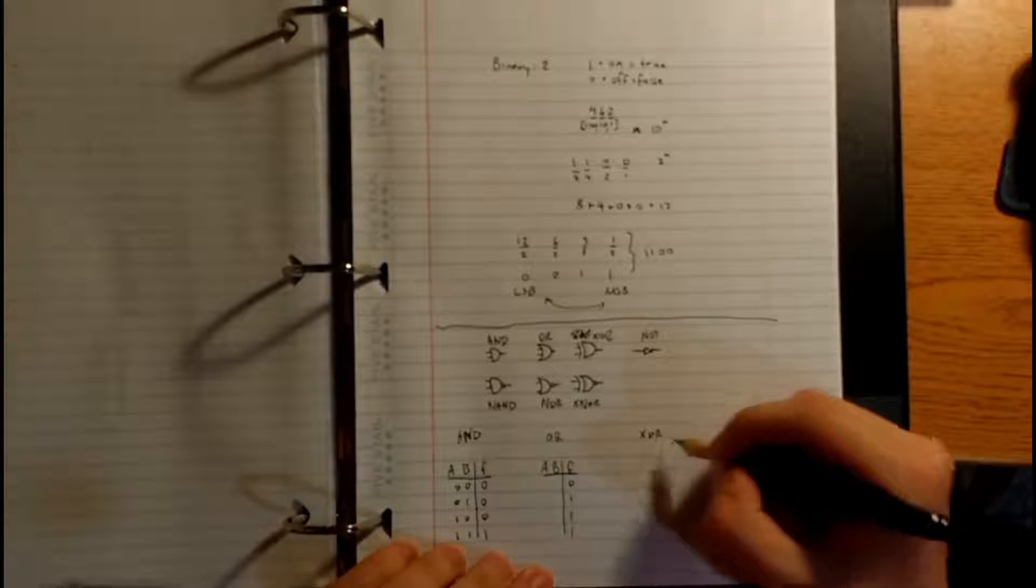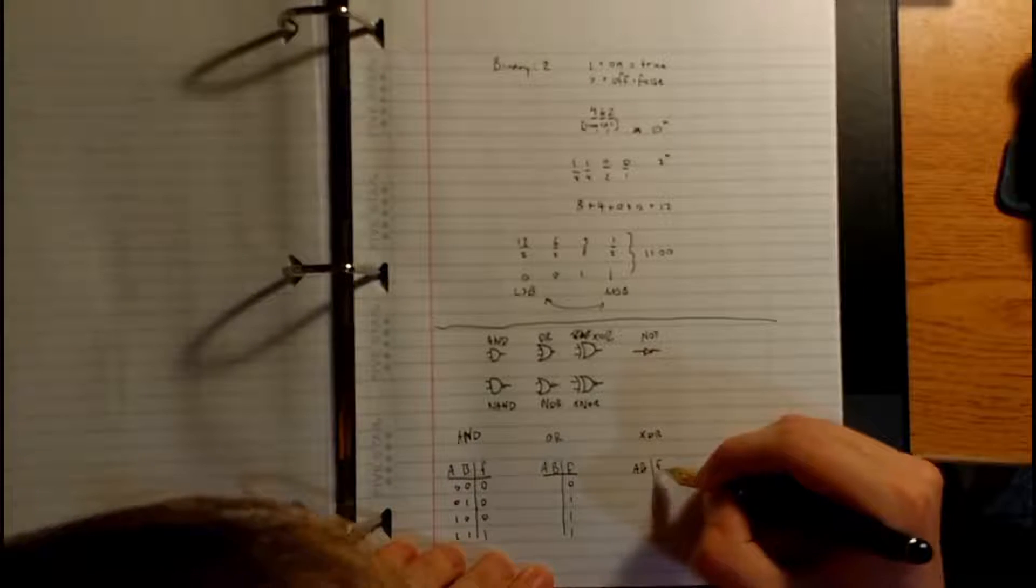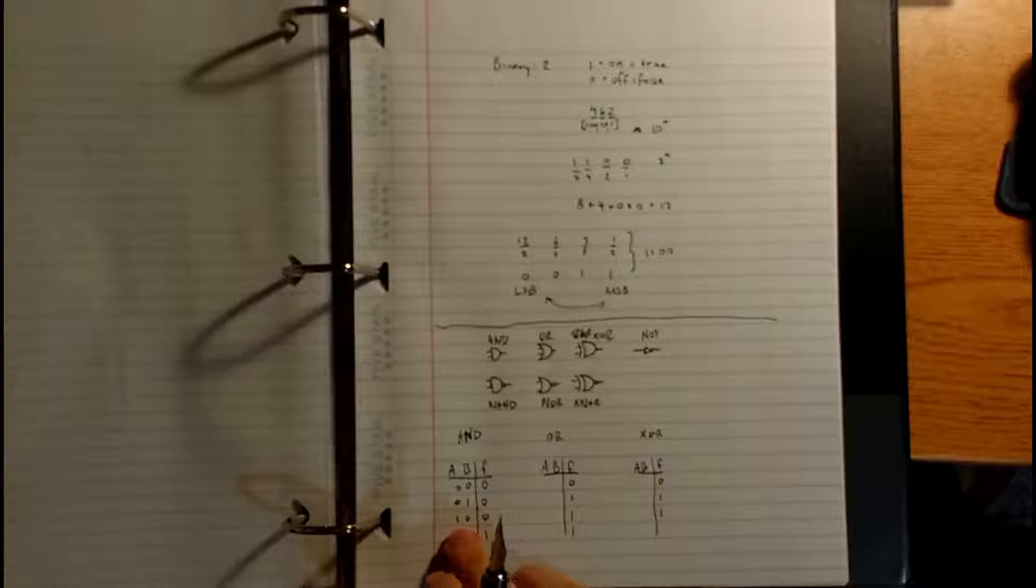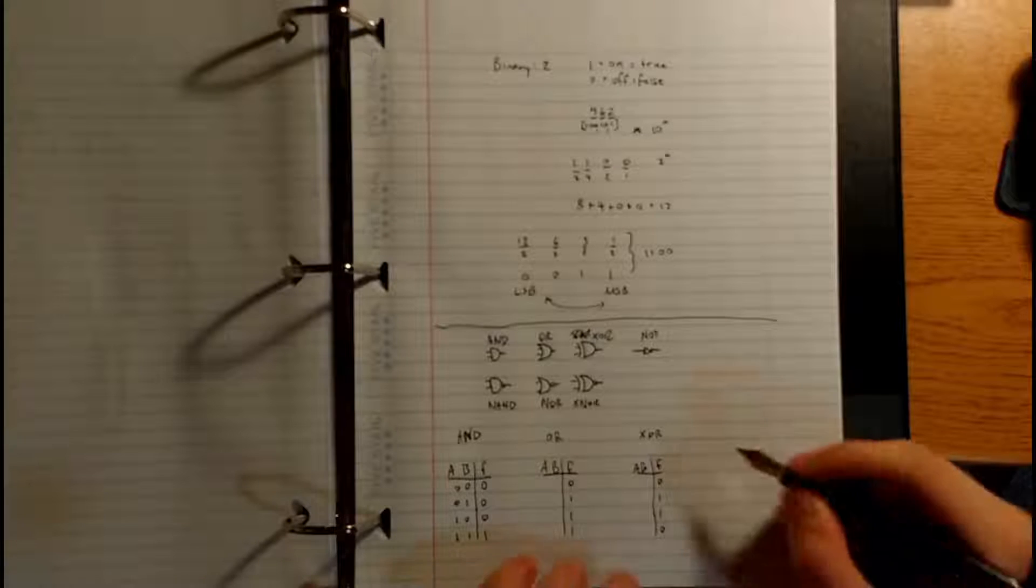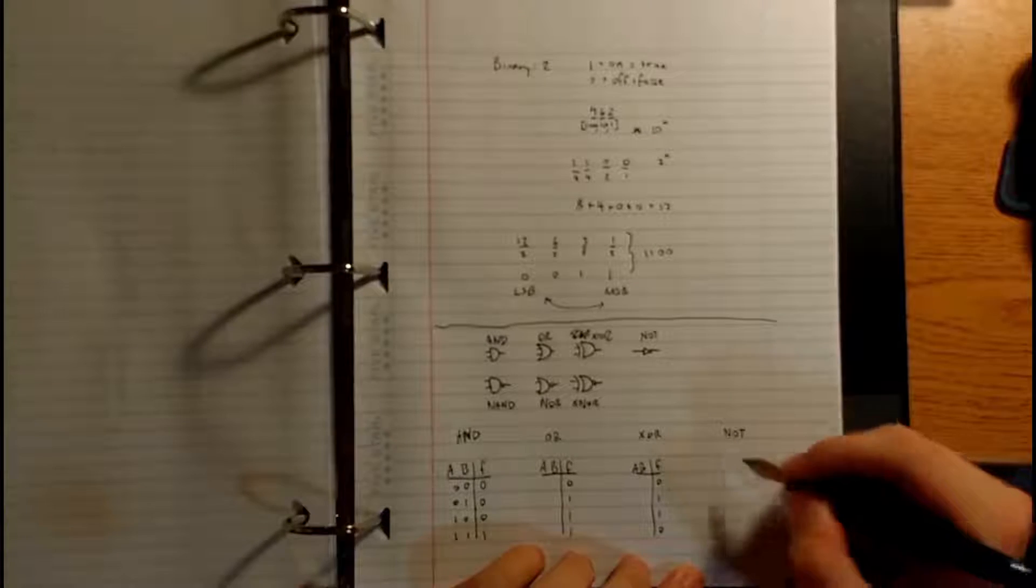For XOR, it's OR, but the last one is different. Because XOR, one of them has to be on, and the others must be off. So if A is on, B must be off. If A is off, B must be on. Here, A and B are both on, so it's 0. And then a NOT gate is pretty obvious. 0, 1, 1, 0. It just inverts the output.